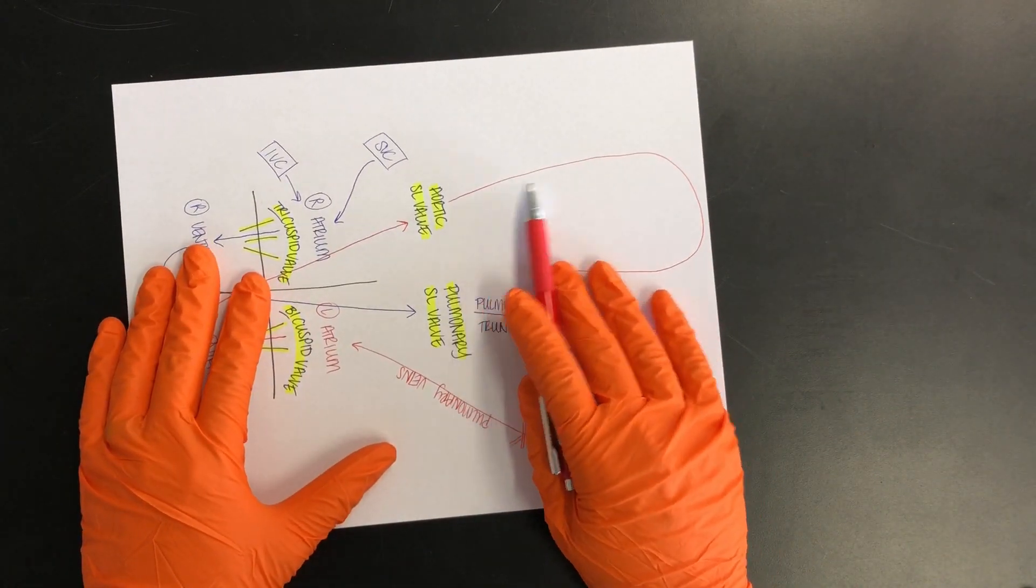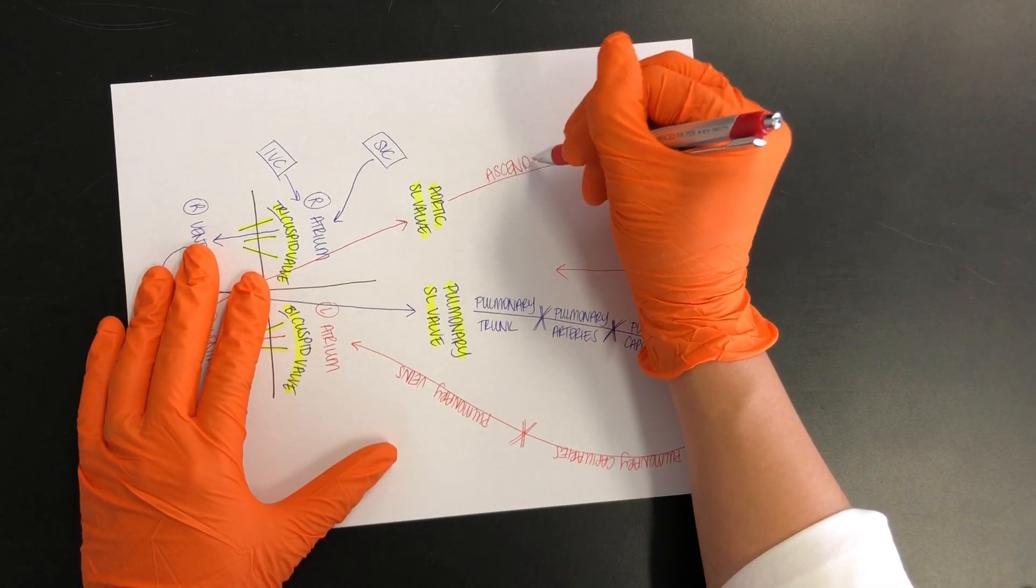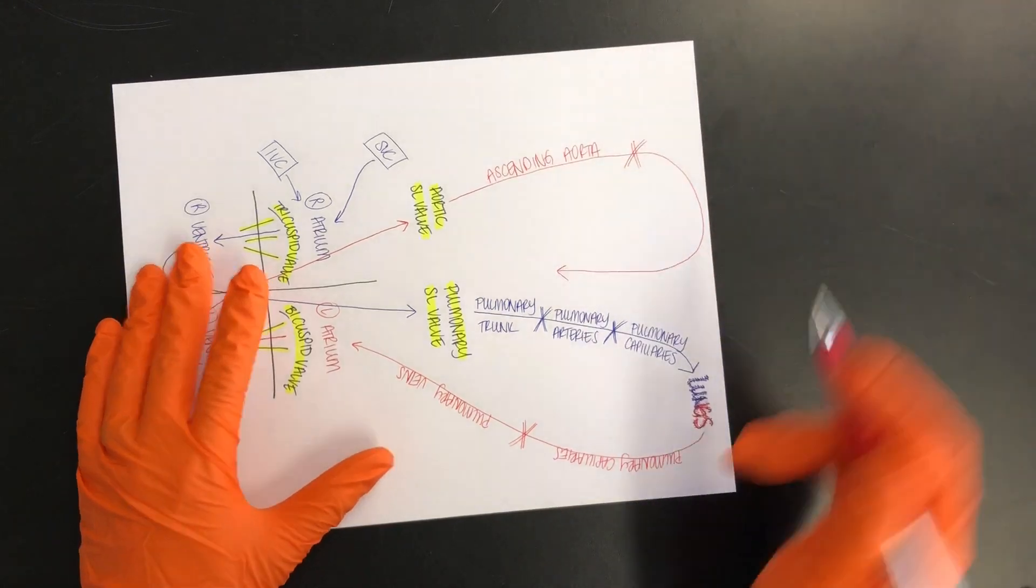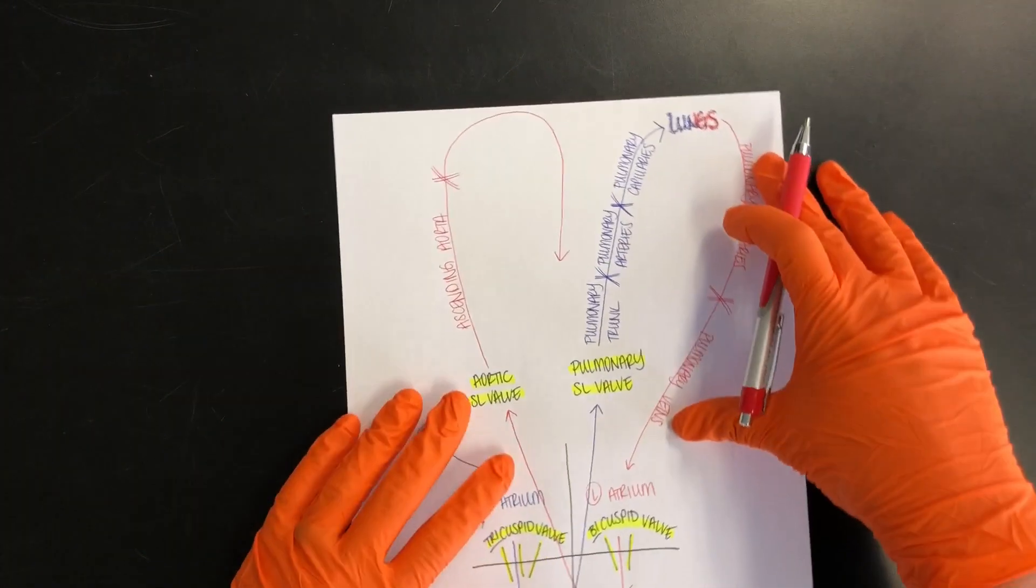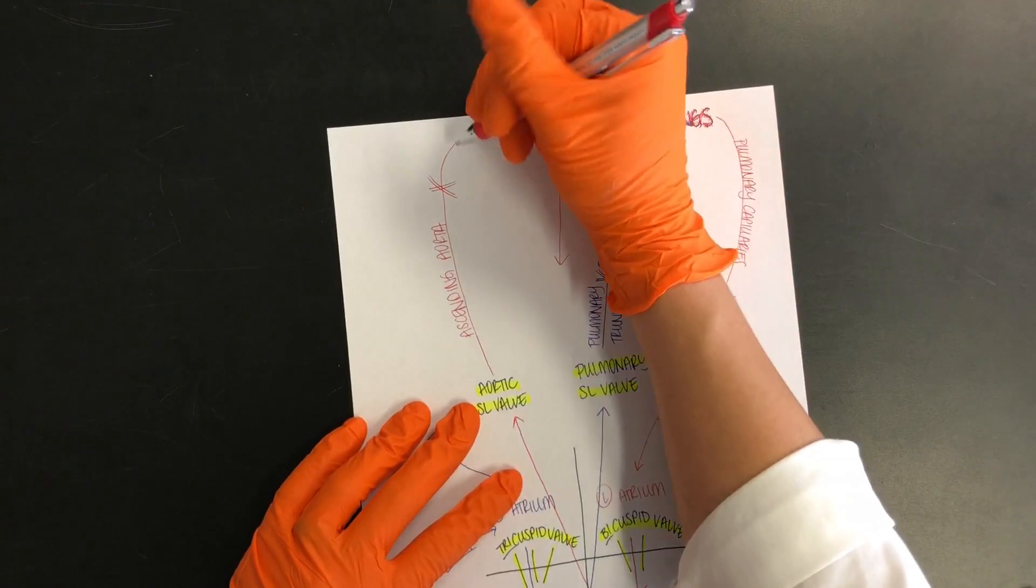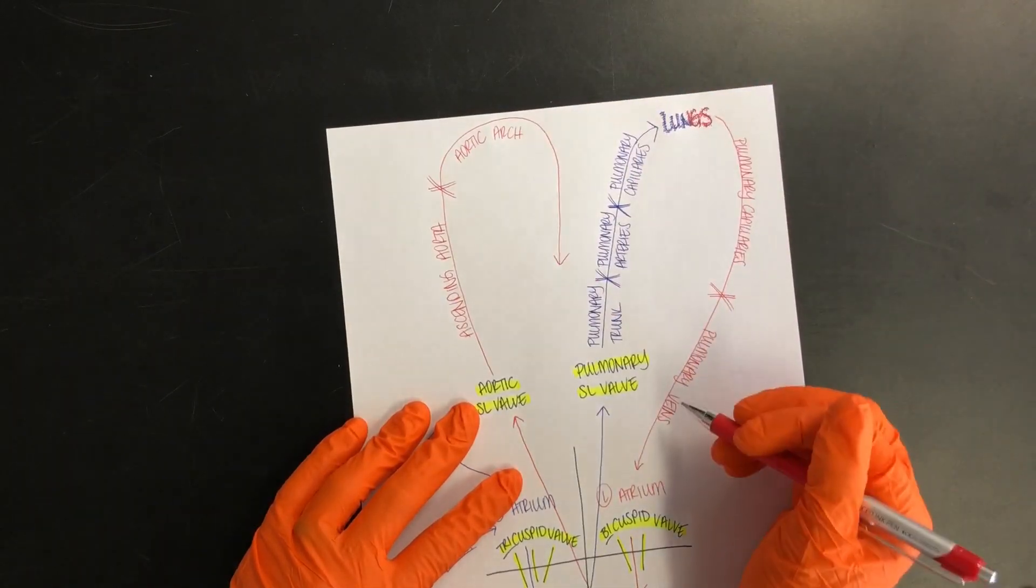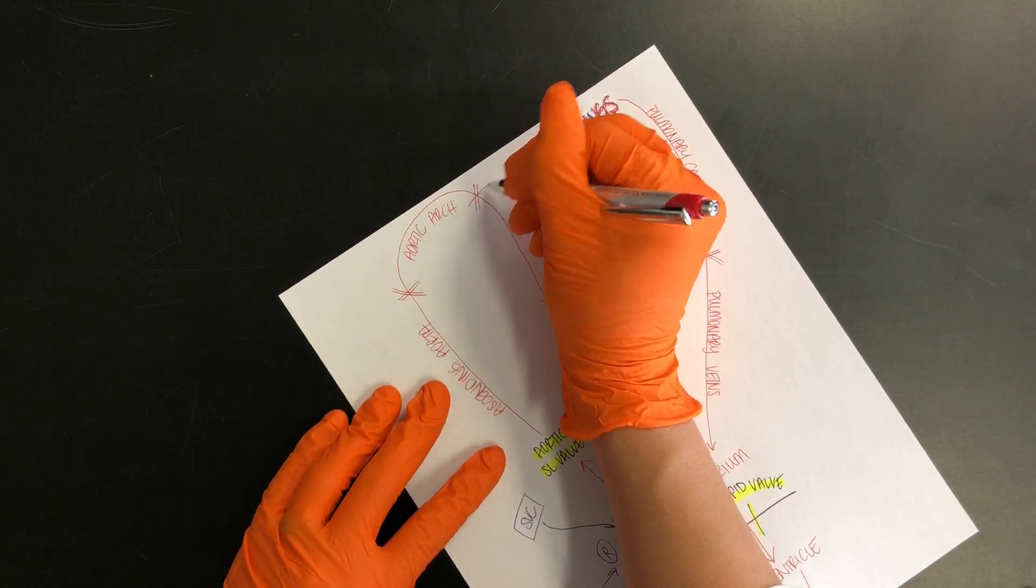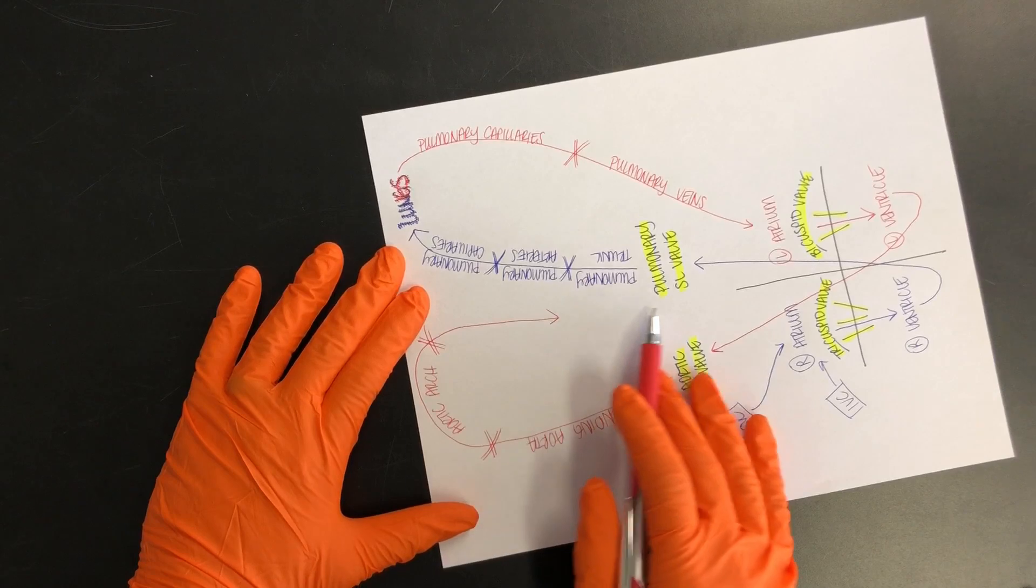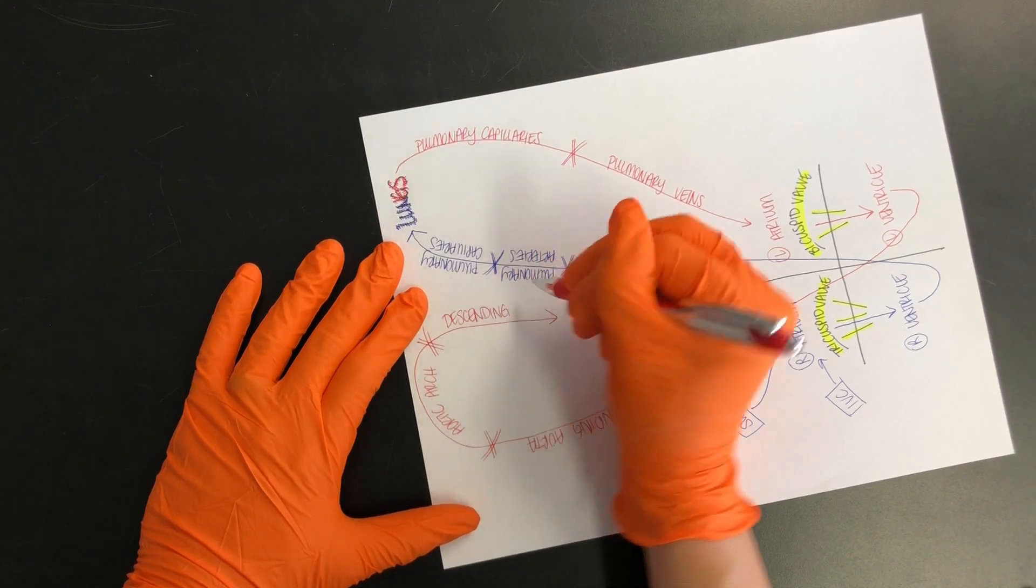So let's go ahead and label the different parts of the aorta. This part that is going upwards or superiorly, we call that the ascending aorta. This part here that looks like an arch is going to be the aortic arch. And then finally, the part that is going downwards or inferiorly, that is going to be the descending aorta.